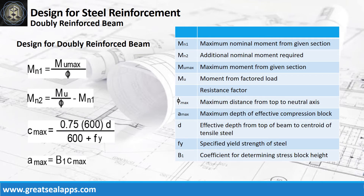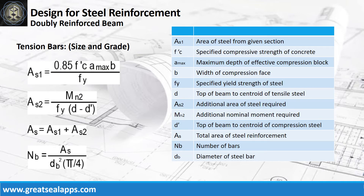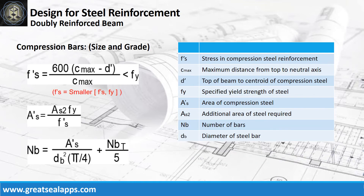For a doubly reinforced beam, first get the nominal moment of MU_max, then subtract it from the nominal design moment to get the additional required moment. To solve for tension bars, get the area of steel from the stress block AS1, then the area of steel from the additional moment AS2, sum them to get the design area of steel AS, and solve the number of bars. For compression bars, solve the stress in compression steel reinforcement and choose the smaller stress between the specified yield strength FY, then get the area of compression steel and its equivalent number of bars.